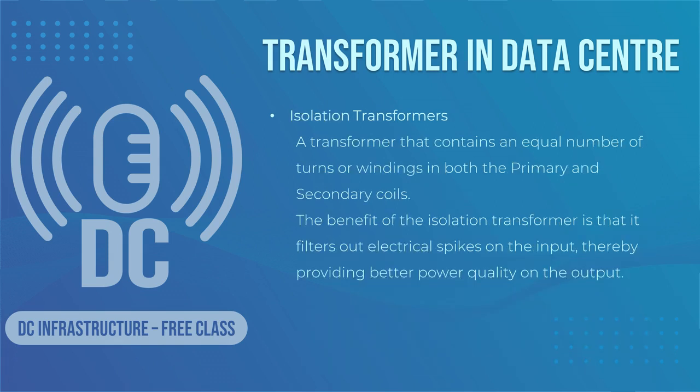An isolation transformer contains an equal number of turns or windings in both the primary and secondary coils. This means the voltage coming into the transformer is equal to the voltage coming out of the transformer. This transformer is usually found in the PDU panel. Within the transformer, the law of induction dictates that transformation takes place without any electrical connection between the input and output. The benefit of the isolation transformer is that it filters out electrical spikes on the input, thereby providing better power quality on the output.